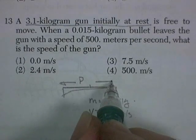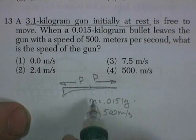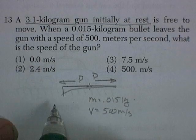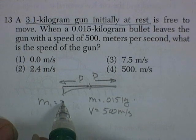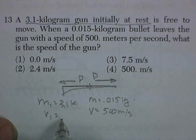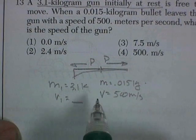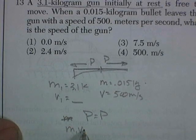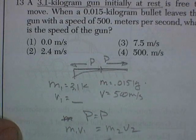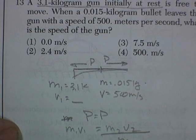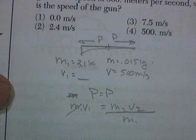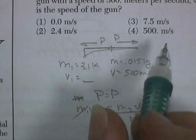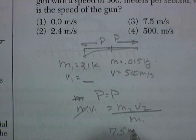The momentum backwards is going to equal the momentum forwards. The momentum before, 0, is going to equal the momentum afterwards. So the bullet's got momentum, the gun will also have momentum. The mass is 3.1 kilograms. Velocity recoil of the gun is the unknown. The formula is M1 V1 equals M2 V2. So M2 V2 divided by M1 is equal to V1. Calculator time. The momentum of the bullet is going to be 7.5 meters per second.